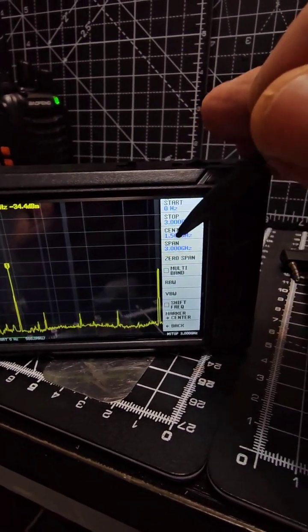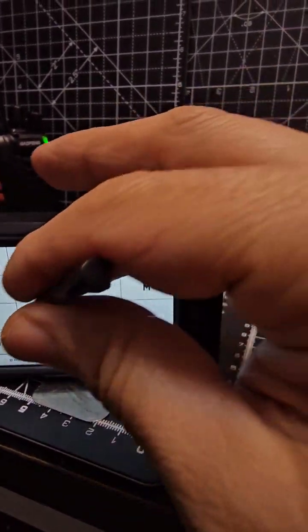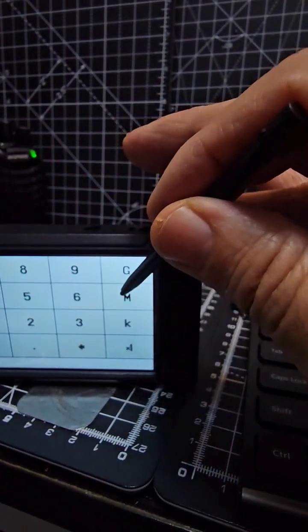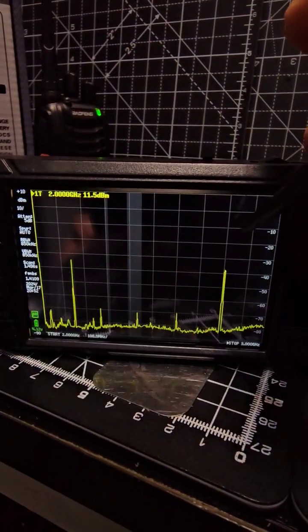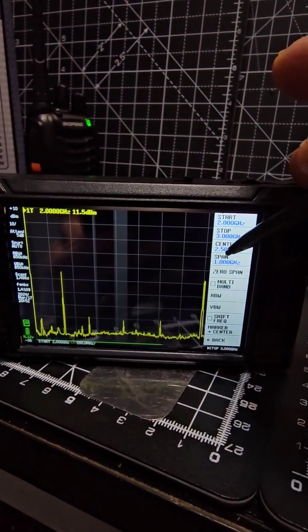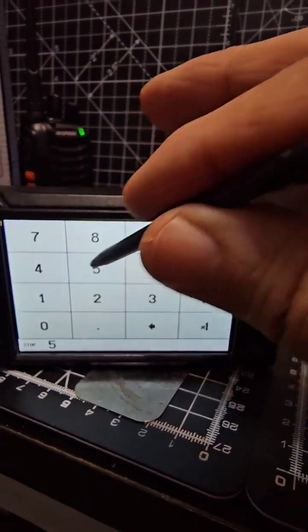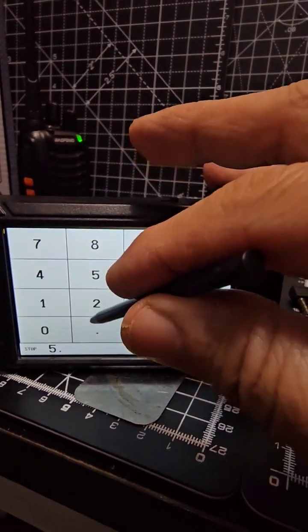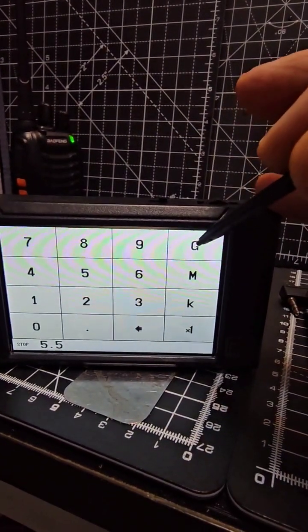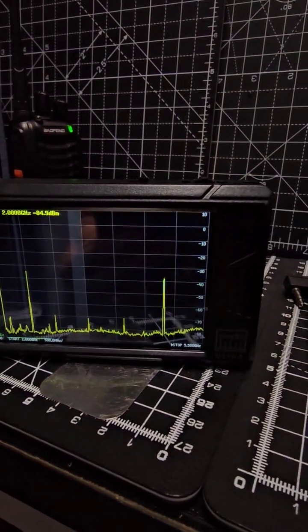Tap the frequency and then at the start you'd put in say two gigahertz. Tap again, stop five point five gigahertz, and you are now measuring. And then go to the end.